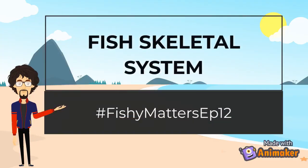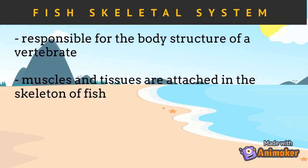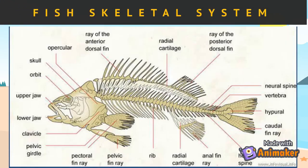Good day everyone. Today we will be talking about the organ system which supports the body structure of fish: the skeletal system. In this episode, we will define the components of the fish skeleton, identify the different components of the skull, vertebral column, and appendicular system, and differentiate the components of the fish skeletal system. This figure shows the different parts of the skeletal system from the upper and lower jaws to the hypural of the caudal fin.